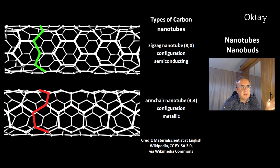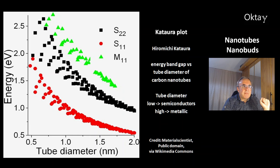These are two examples. At the top is the zigzag nanotube 8-0 configuration, a semiconductor. At the bottom you can see the difference in the position of the hexagons. That's the armchair nanotube 4-4 configuration, and this one is metallic.